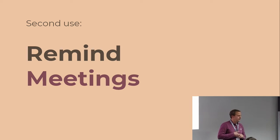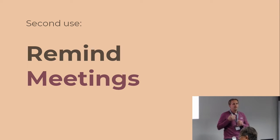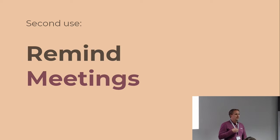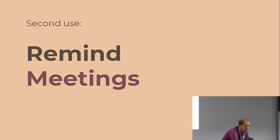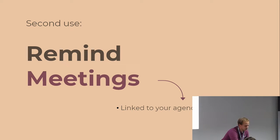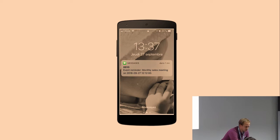The second use is meeting reminders. You have the opportunity to send a pop-up on the mobile phone instead of sending an email — for example, one hour before a meeting to be sure that attendees will be ready. The meeting reminder is linked to your agenda and we will see how it works. For example, you receive an SMS with the name of the meeting and the date and time.